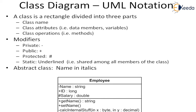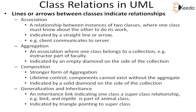Then we come to class relationships in UML notation. There are different types of relationships: association, aggregation, composition, generalization, and inheritance. Association is a relationship between instances of two classes where one class must know about the other to do work. It is indicated by a straight line or an arrow — a straight line without an arrow means it is two-way, while an arrow indicates one-way direction. For example, a client communicating to a server.